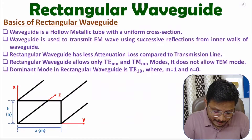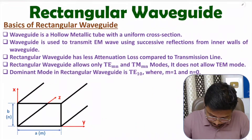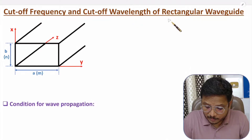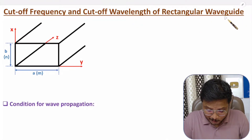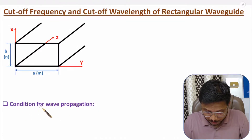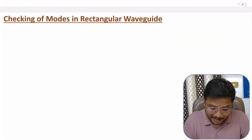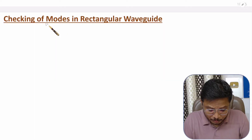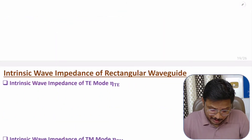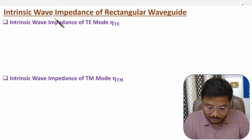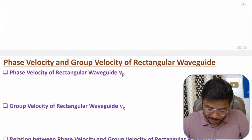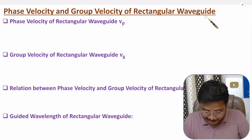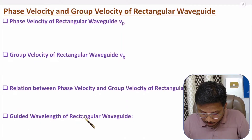First of all, I will be discussing about basics of rectangular waveguide. After that, I will explain how to identify cutoff frequency and cutoff wavelength with rectangular waveguide, and I will also explain what are the conditions for wave propagation. After that, I will explain checking of modes in rectangular waveguide — this topic is quite interesting. After that, I will explain how to identify intrinsic wave impedance, phase velocity and group velocity, and guided wavelength of rectangular waveguide.